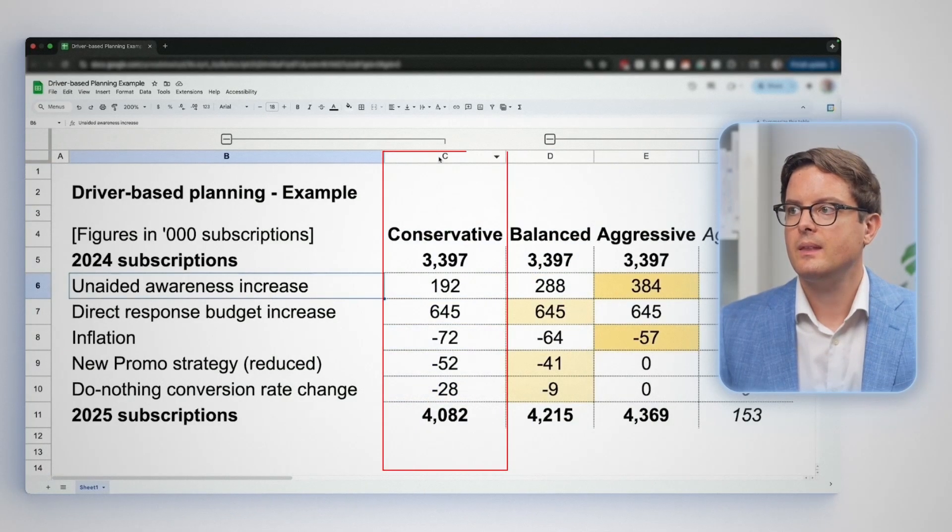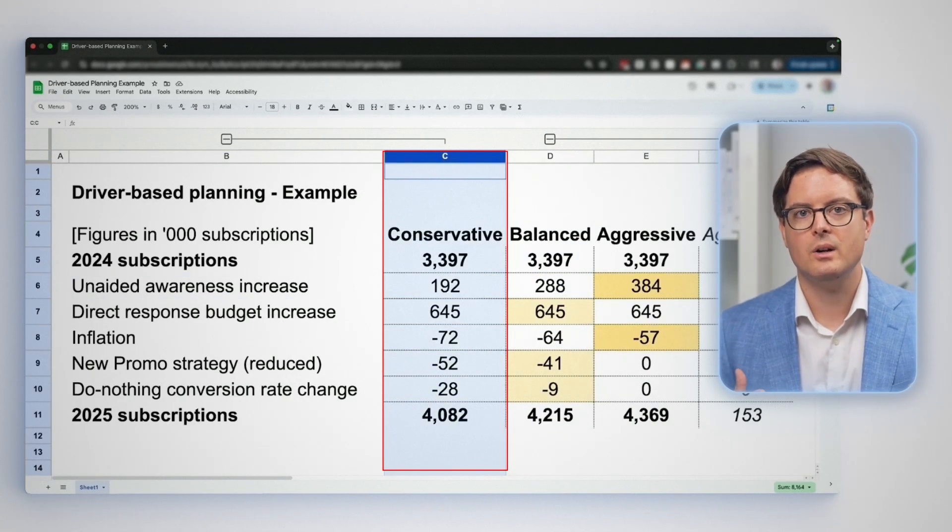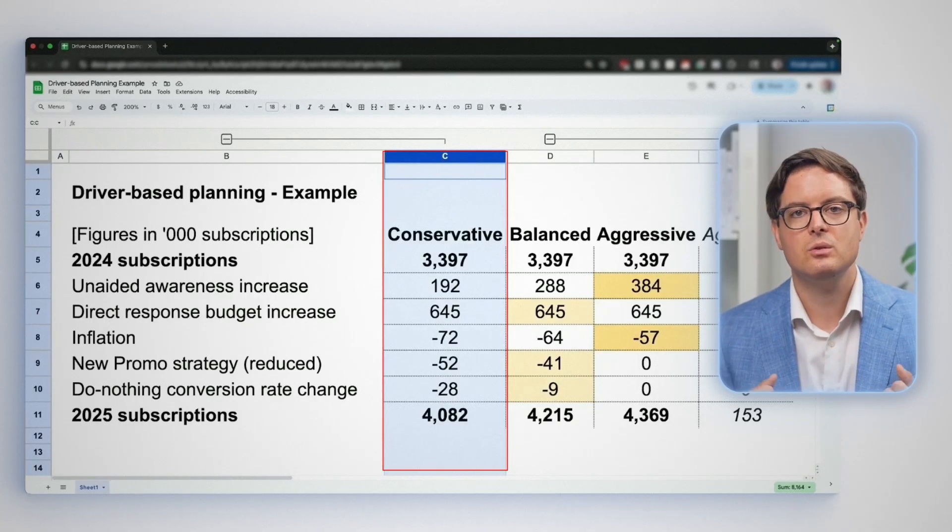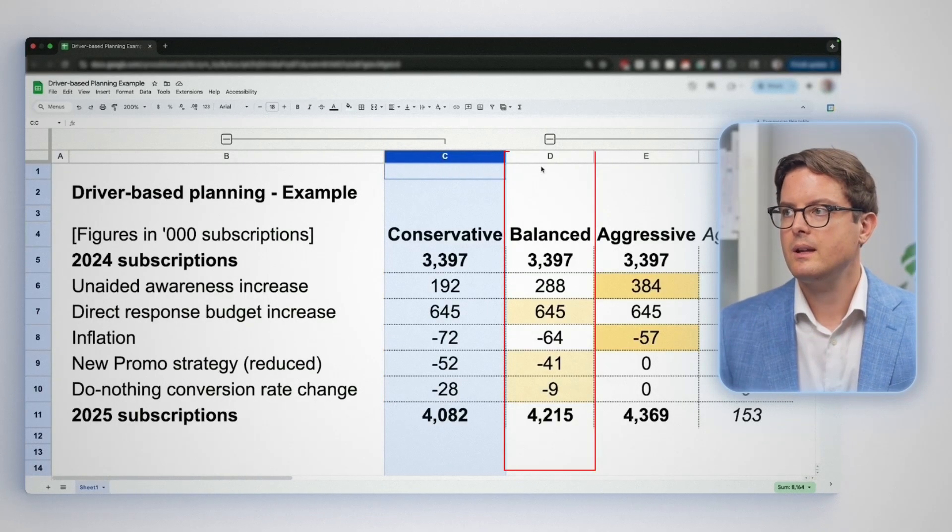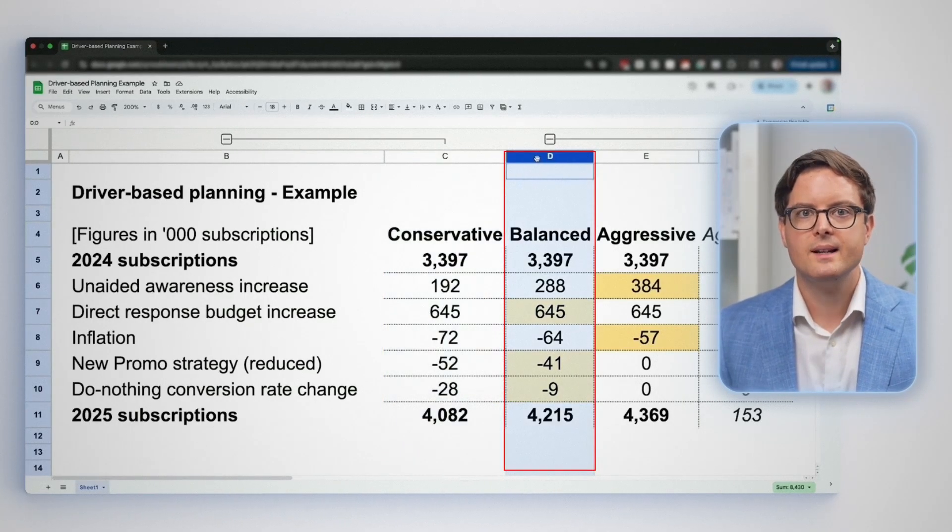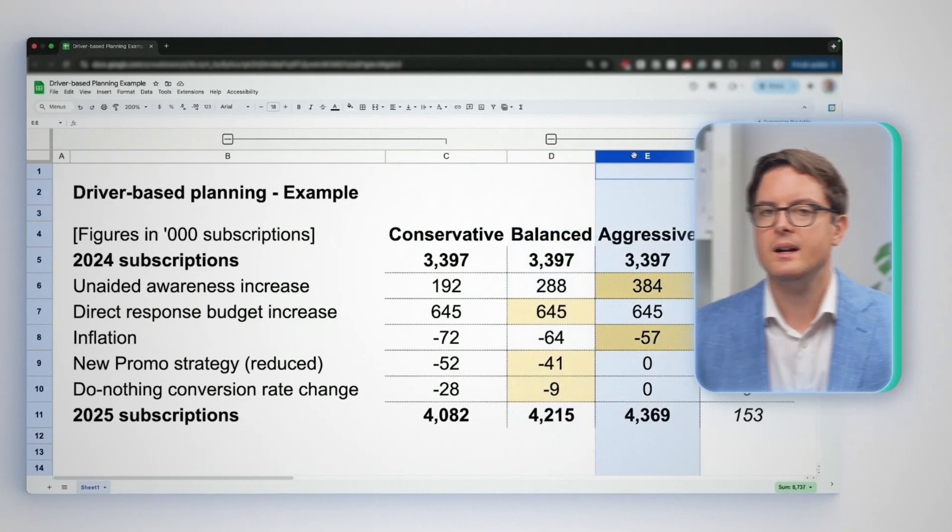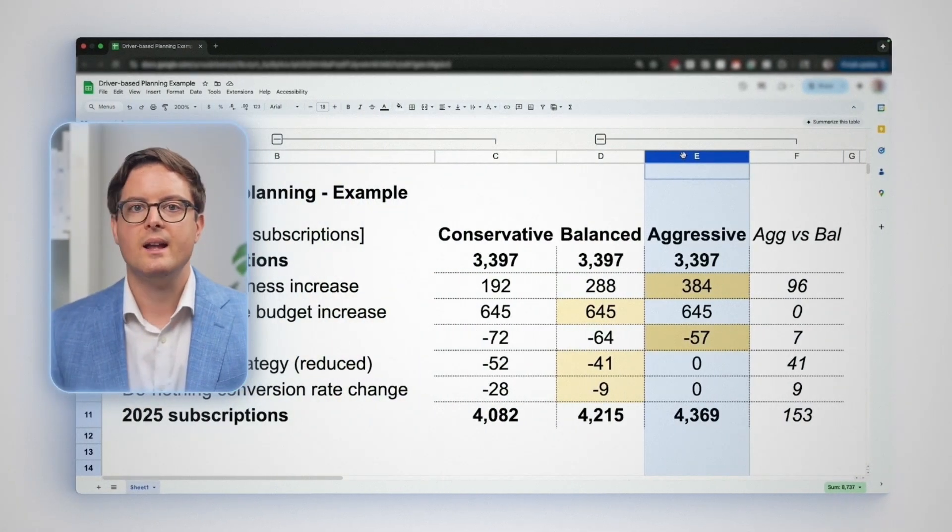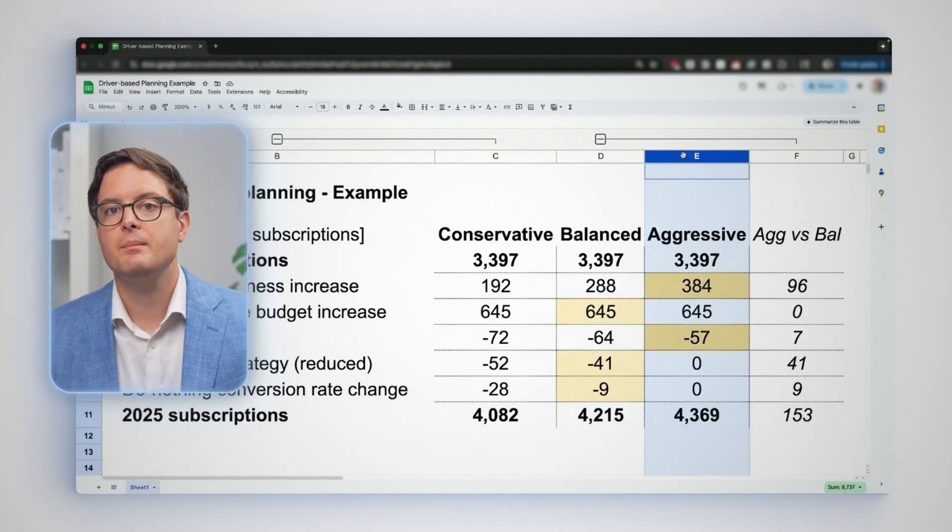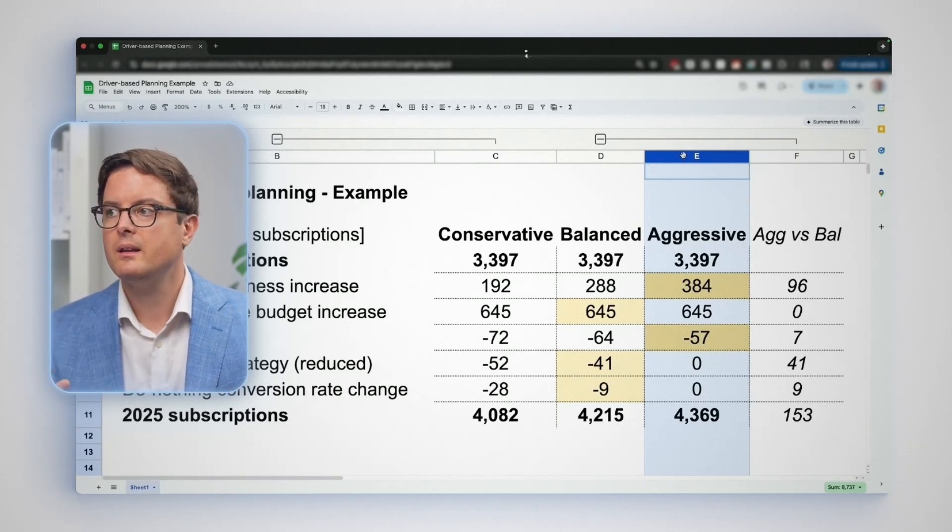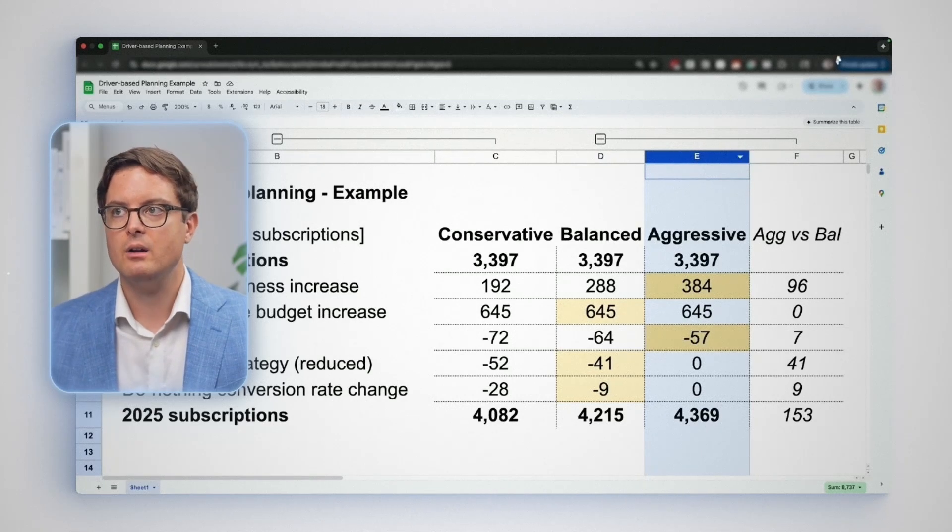In the conservative scenario, they assumed unaided awareness would only increase by 2%. In the balanced scenario, they bumped that up to 3%. In an aggressive scenario, they went with 4%. They did a similar exercise for each driver, where they had some calculations in the background that helped them determine what would be an optimistic versus a pessimistic scenario for each driver.